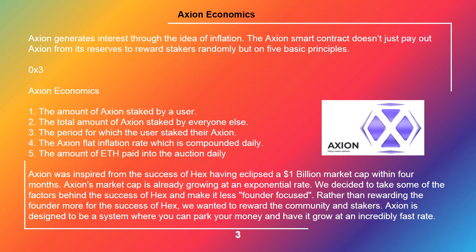Axion Economics — 5 principles: 1. The amount of Axion staked by a user. 2. The total amount of Axion staked by everyone else. 3. The period for which the user staked their Axion. 4. The Axion flat inflation rate, which is compounded daily. 5. The amount of ETH paid into the auction daily.